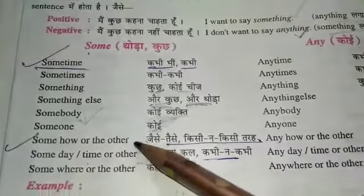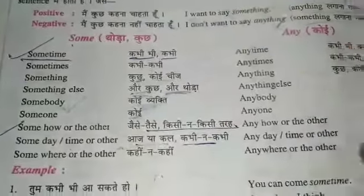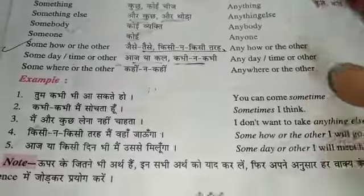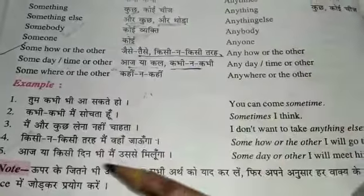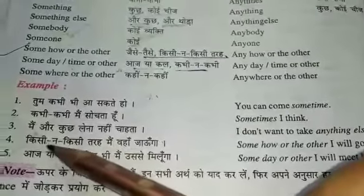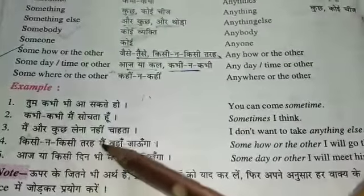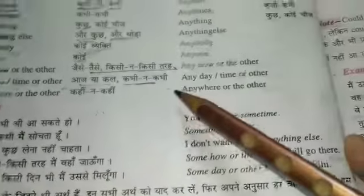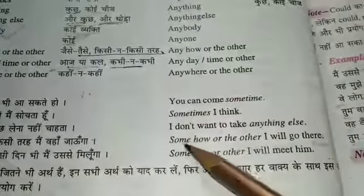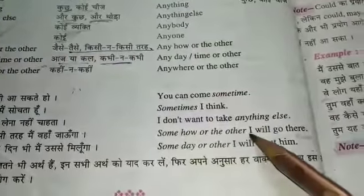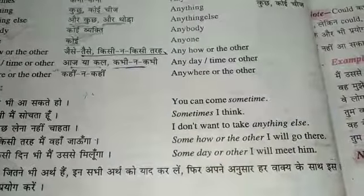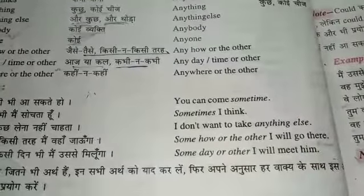Somehow or the other — jaisi taisi kisi na kisi tarah. Somehow or the other I will go there. Kisi na kisi tarah mein vahan jaunga.